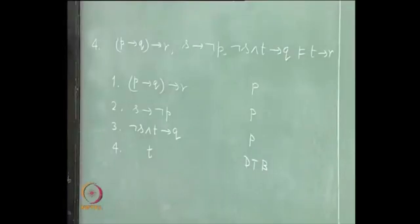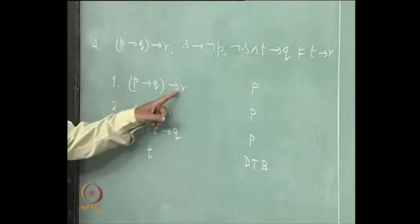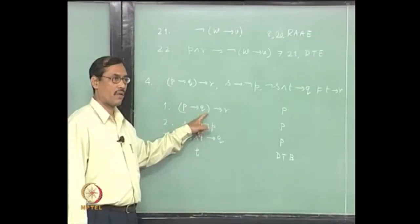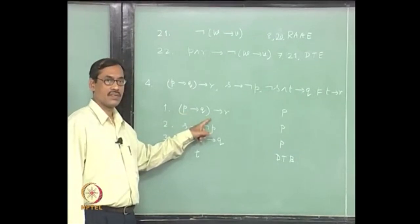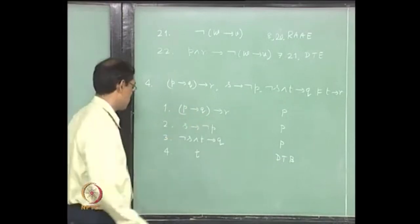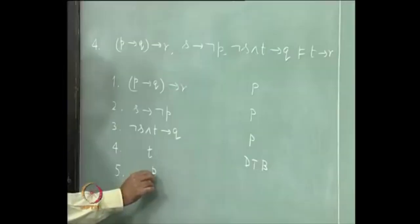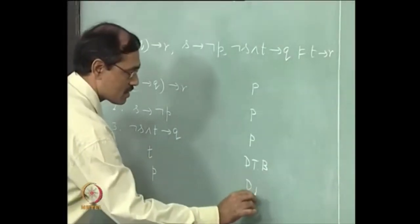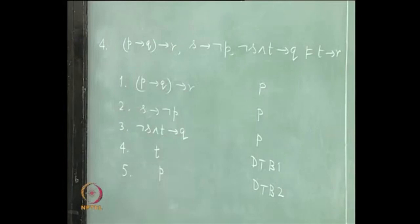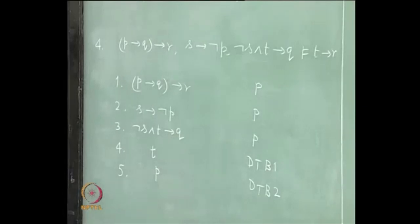Now comes the extra premise because of the deduction theorem. We say T, deduction theorem begins. Our aim is to get R. How to get R? We can get it if we prove P implies Q. But how to prove P implies Q? Use the deduction theorem. Assume P and infer Q. We take another extra hypothesis as P. We say deduction theorem again begins. But then there is a problem.